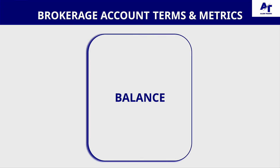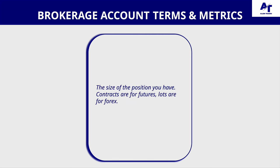Next we have balance. Balance is the entire amount of money in your account, including open trades. So if you had that gold trade open, it would be how much money you had before the trade, plus or minus whether you're up or down — that is your overall balance. Next we have contracts and lots, which is the size of the position you have. We use contracts for the futures market and lots for the forex market, which we'll get into in the next video.